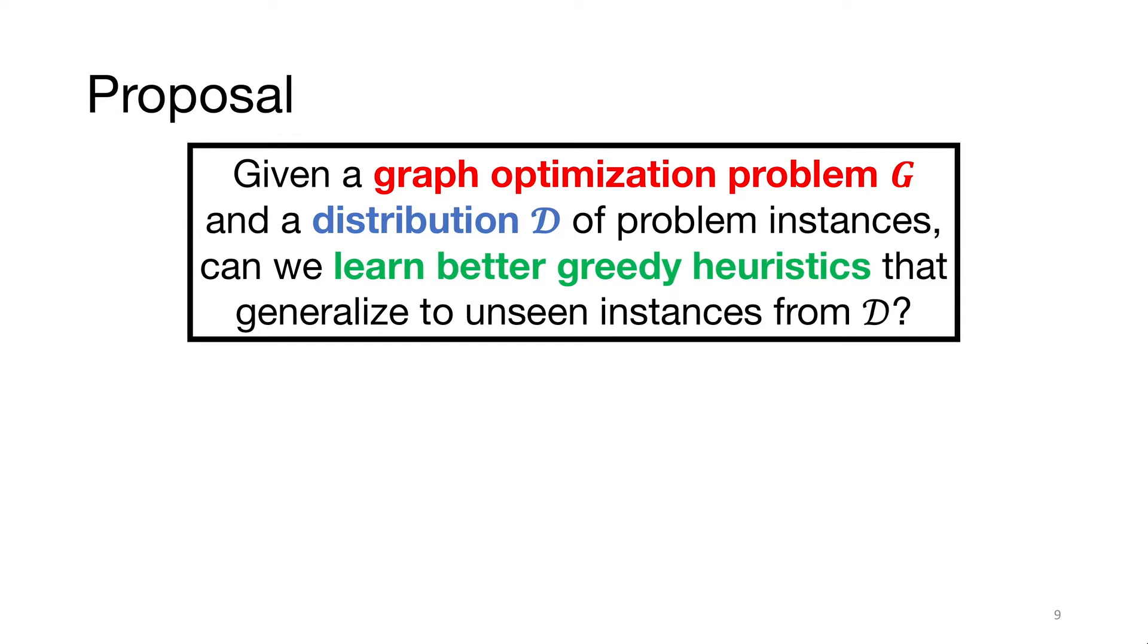So, we propose to learn better greedy heuristics, which can generalize to instances from the same distribution as in training.